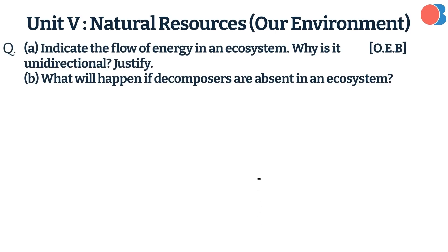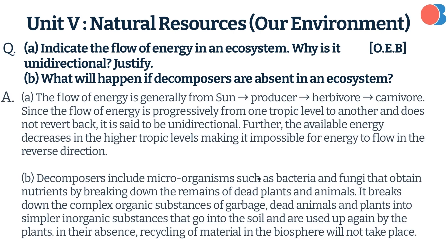Indicate the flow of energy in an ecosystem. Why is it unidirectional? Justify. What will happen if decomposers are absent in an ecosystem?